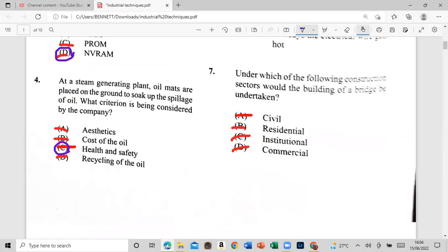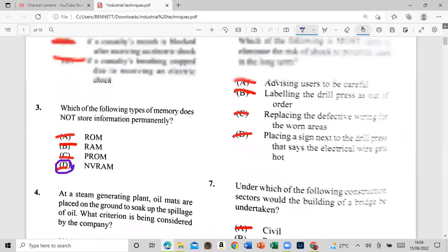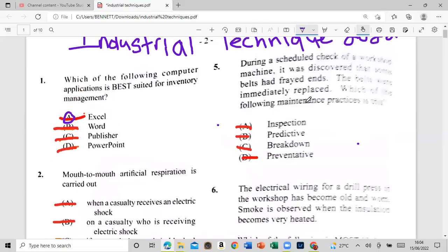Okay, nobody wanted too much but it's appearing in general life in this schedule. Check out the workshop machine. It will discover that some belts have free the pins the belts. This are then immediately replaced. Which of the following maintenance practices is this: is it inspection, predictive, breakdown, or preventative?